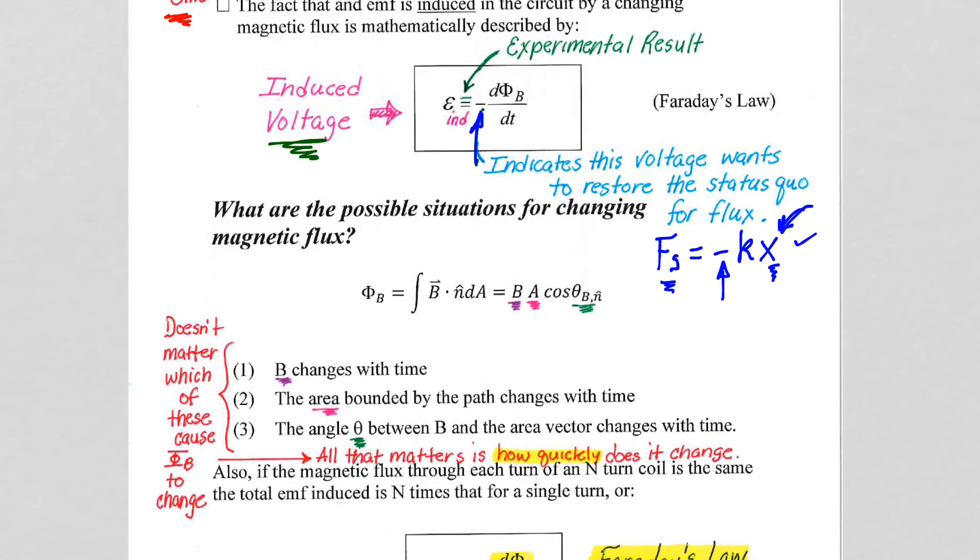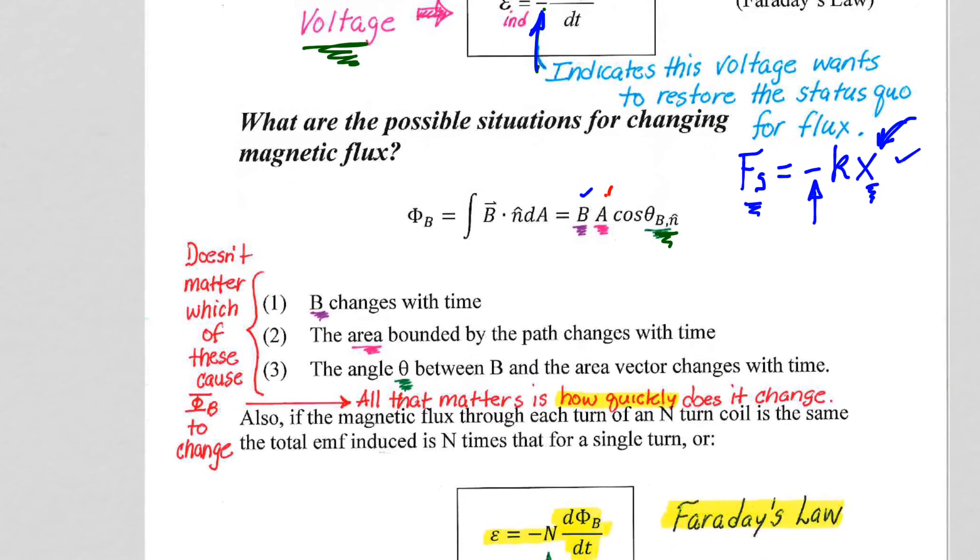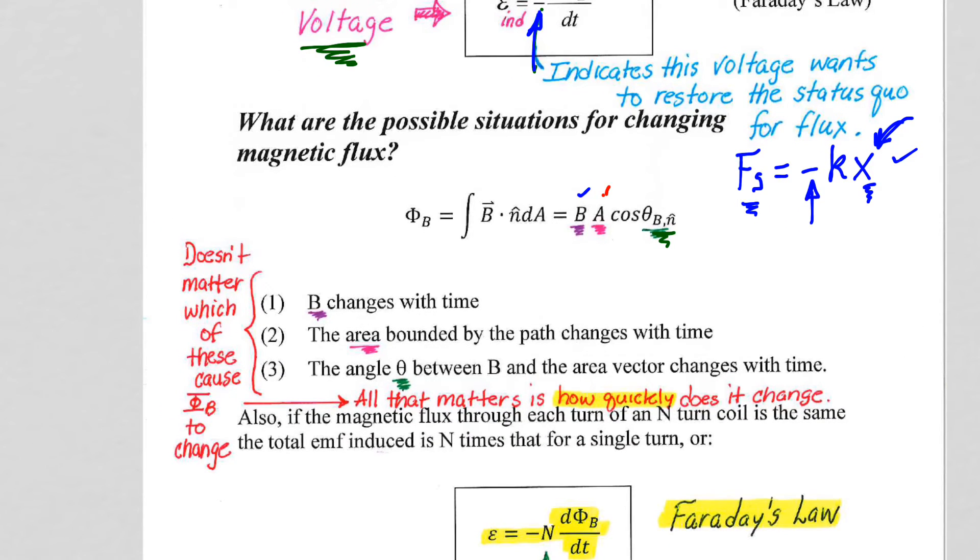It's a dot product. So we have that magnetic flux is the B field times the area. So the B field times the area times the cosine of the angle between the B field and the n hat vector, which is the area vector drawn from a common origin. So it doesn't matter which one of those is changing.